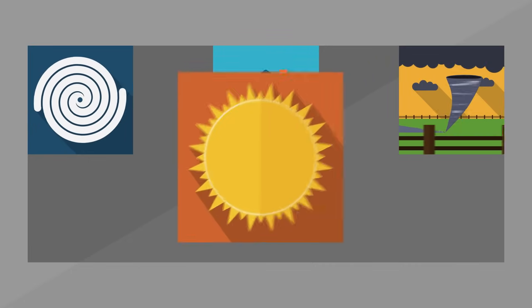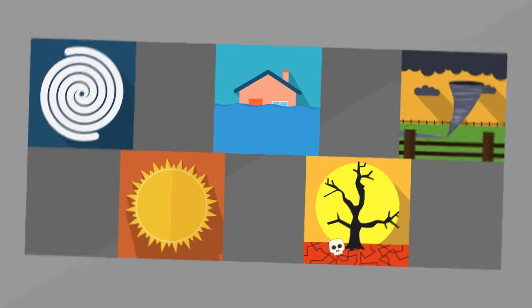Climate change also causes more frequent and intense natural disasters such as hurricanes, floods, tornadoes, heat waves, and droughts. So the question is, how do we stop this?